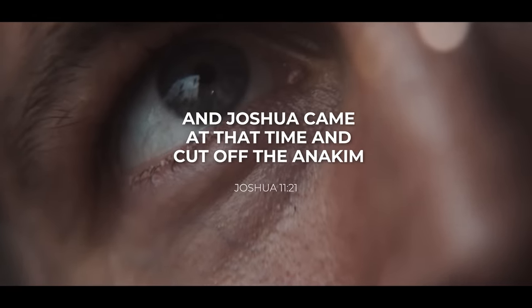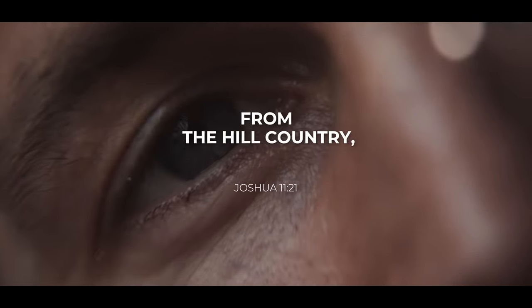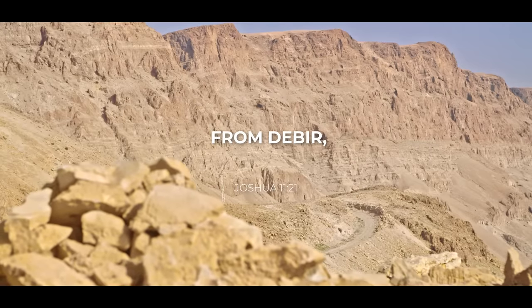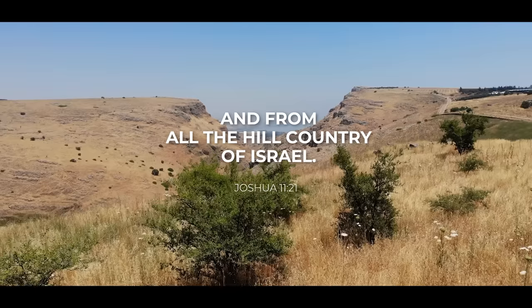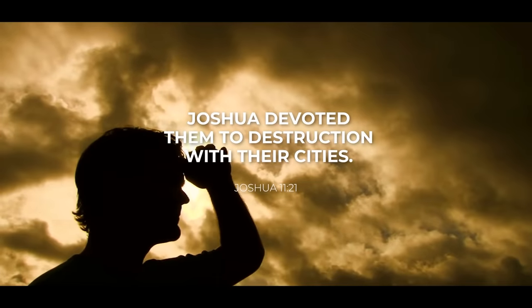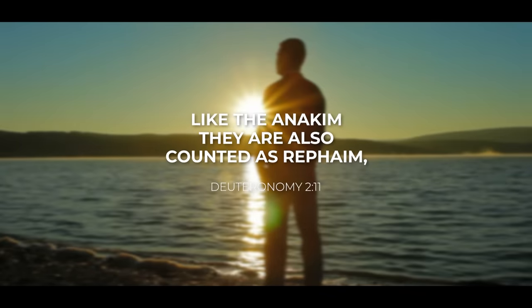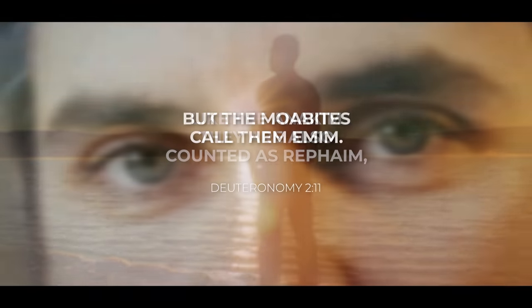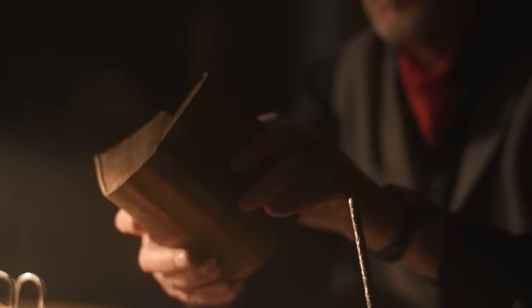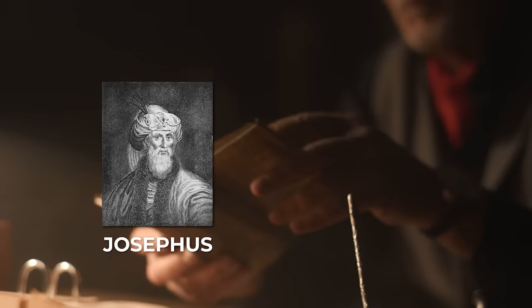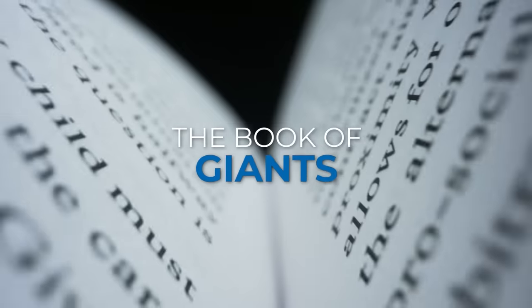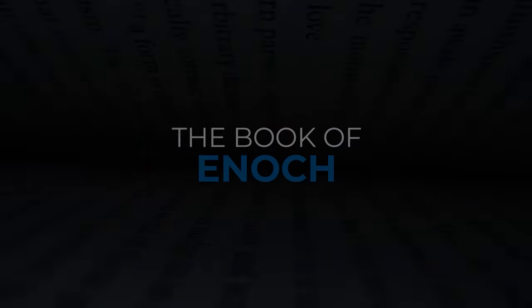Joshua 11 verse 21, And Joshua came at the time, and cut off the Anakim from the hill country, from Hebron, from Deber, from Anab, and from all the hill country of Judah, and from all the hill country of Israel. Joshua devoted them to destruction with their cities. So, they had many cities. There were many of them. Deuteronomy 2 verse 11, Like the Anakim, they are also counted as Rephaim. But the Moabites called them Emim. The evidence of the Nephilim has always been there. Take some time and look at the evidence of non-biblical writers, like Jewish historians, like Josephus, and Philo. Then the second temple literature, the book of Giants, the book of Enoch, and so forth.